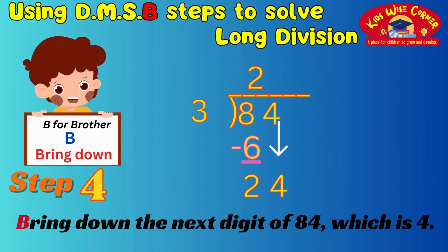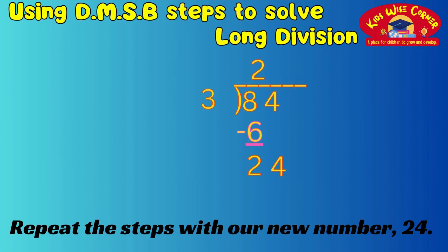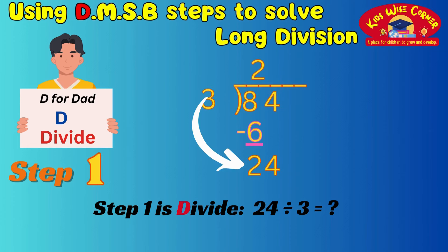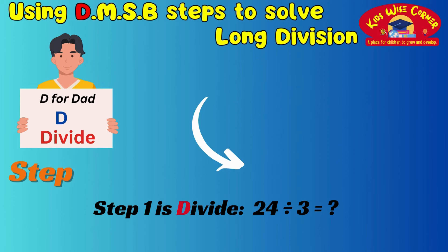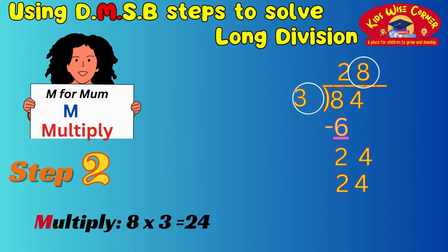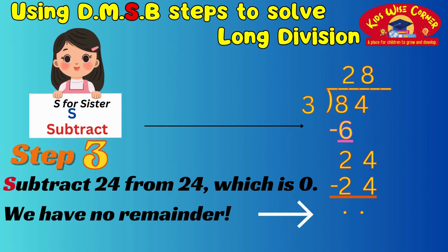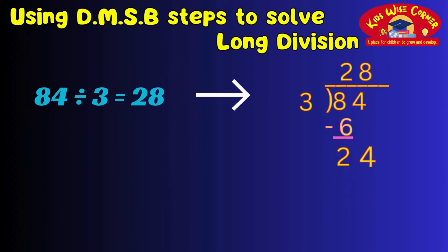Step 4 — bring down: bring down the next digit of 84, which is 4. We have 24. Now we repeat the steps. Ask yourself, how many times does 3 go into 24? It goes 8 times. Write 8 above the 4. Multiply 8 by 3, which is 24. Write 24 under the 24. Subtract 24 from 24, which is 0. We have no remainder. So 84 divided by 3 equals 28.